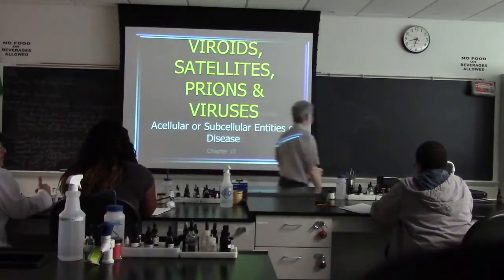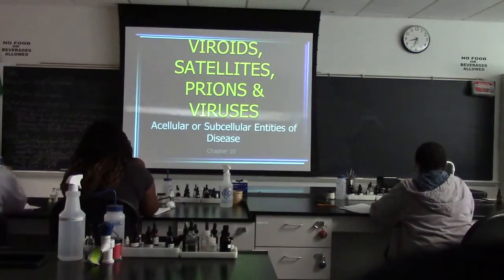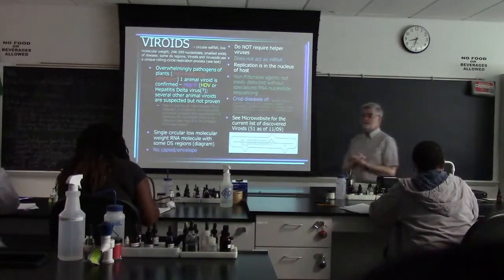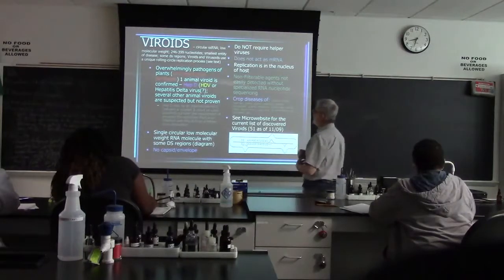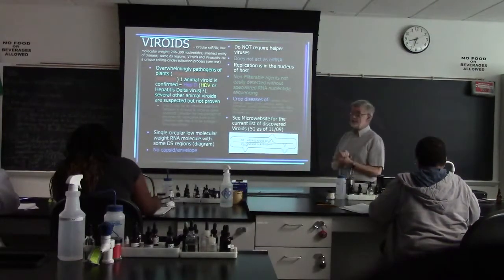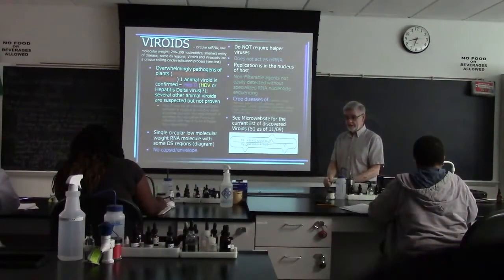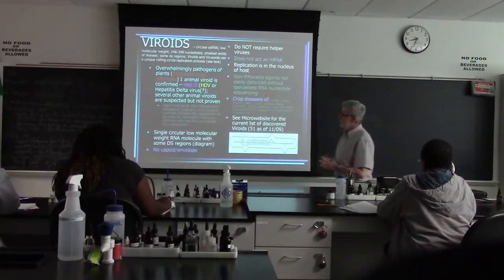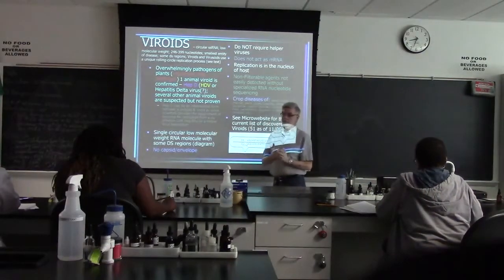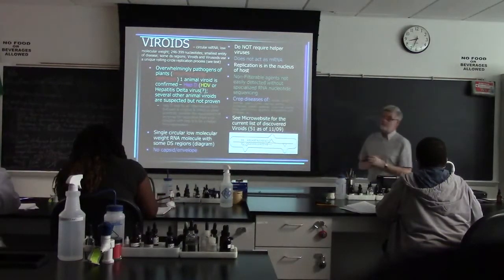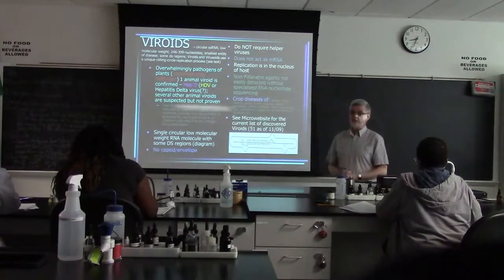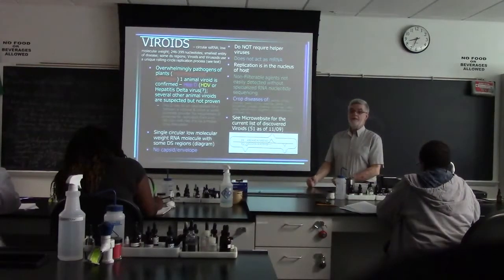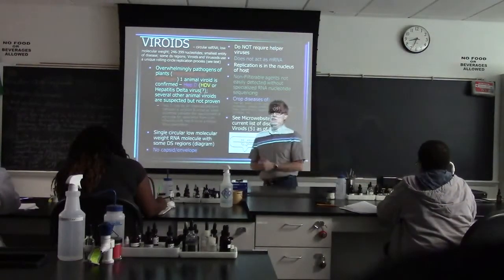We're going to be talking about viroids, satellites, and other acellular parasites today. Viroids are circular, low molecular weight, usually single-stranded RNA. There are only 246 to 399 nucleotides, so they are the smallest entity of disease. The smallest thing that can cause a disease on this earth is a viroid.